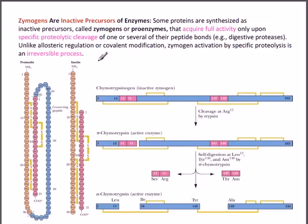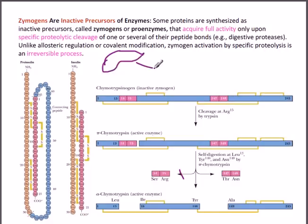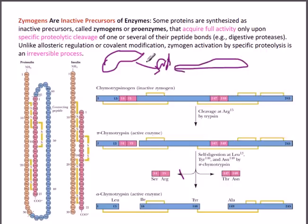Now why do they do this? Suppose this is an organ — so this organ produces chymotrypsin for example. This chymotrypsin enzyme is not made in its fully activated form; this is a precursor of that chymotrypsin enzyme, and it is secreted by this organ.